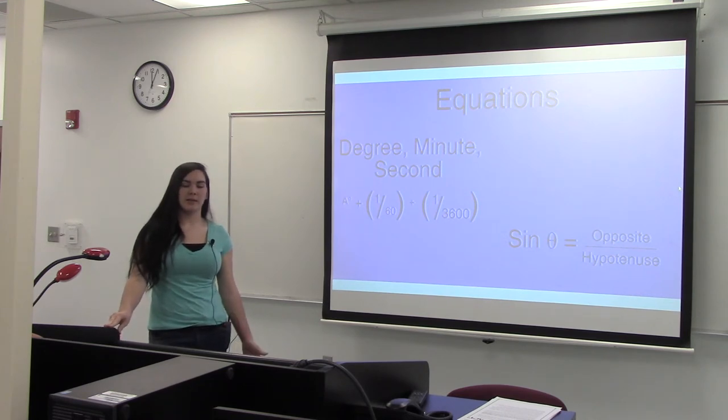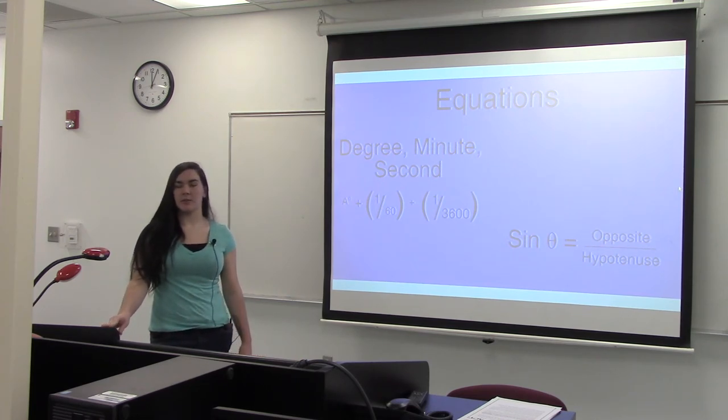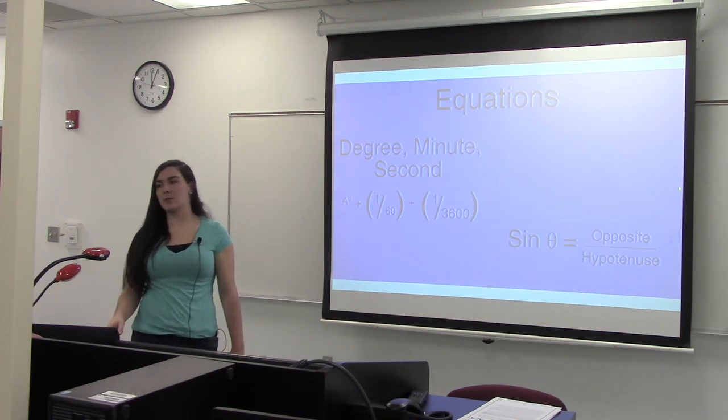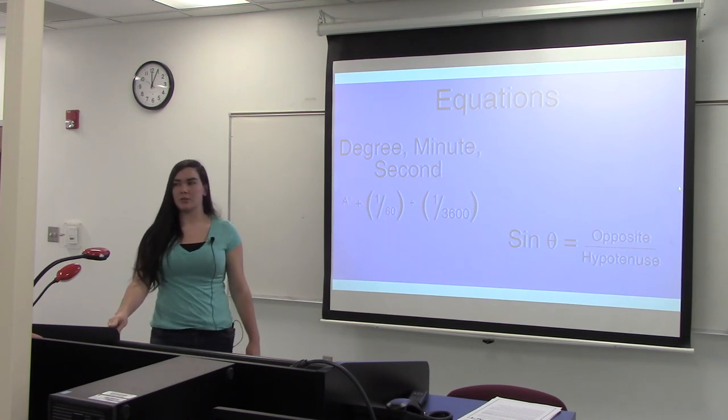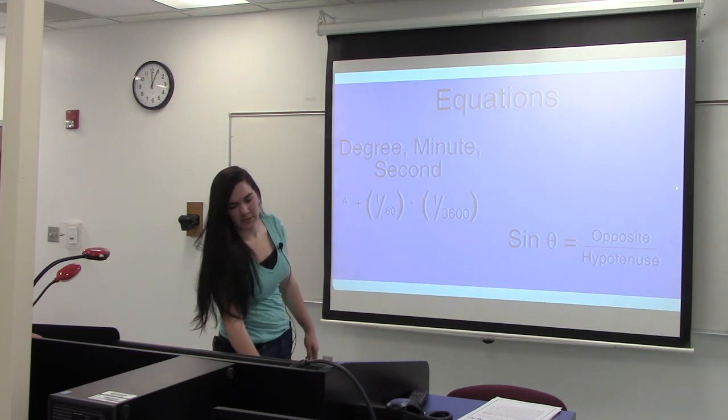That's what you would use in place of theta in the sine equation, which would be equal to x divided by 132. Since the x is on top, you would multiply both sides by 132 and rounded to the nearest foot you get roughly 120 feet. That's it.